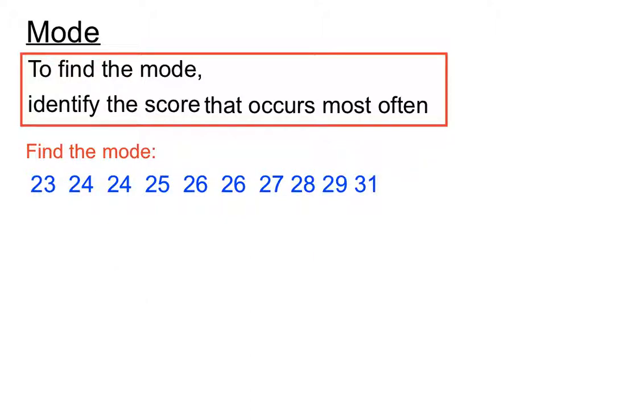In another example we have here, we have the 24s that occur a couple of times. There's 26s that occur a couple of times. And none of the scores occur more often than that. So this is going to be interesting.